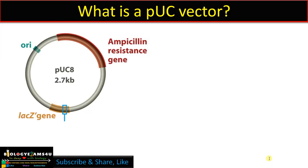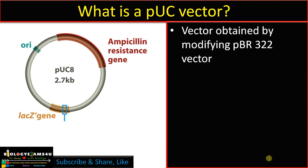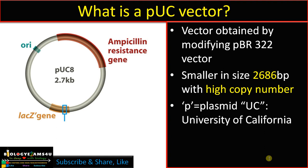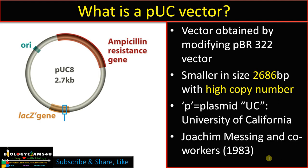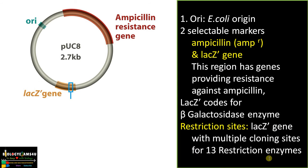What is the PUC vector? The PUC vector is actually a modified version of the PBR 322 vector. It has a small size of 2686 base pairs with a high copy number — that is the advantage over PBR 322. It is called PUC: P for plasmid, and U and C for University of California. The vector was developed by Messing and co-workers in 1983.